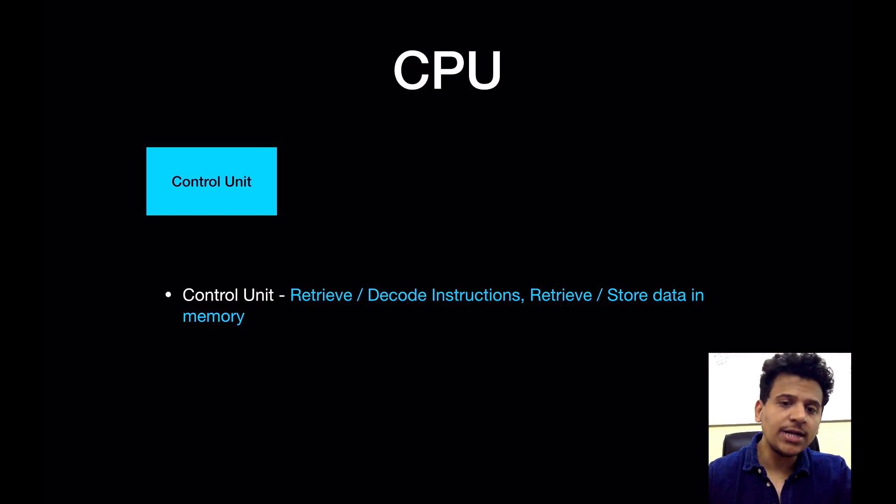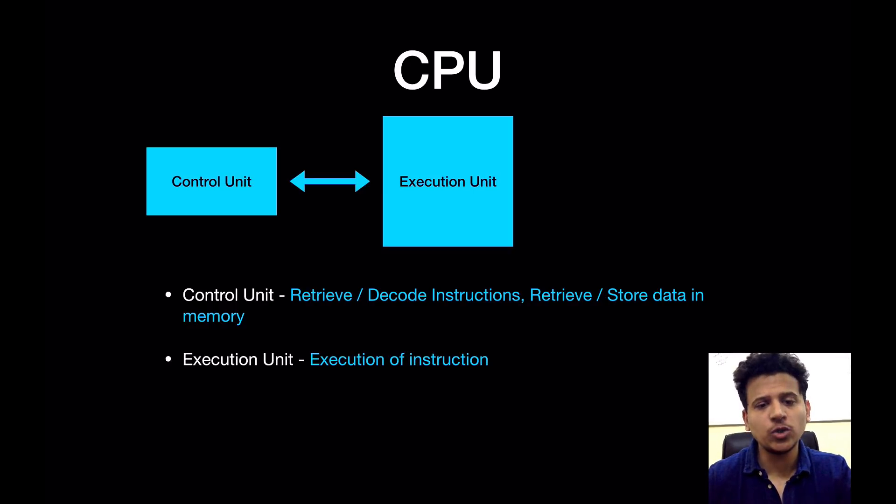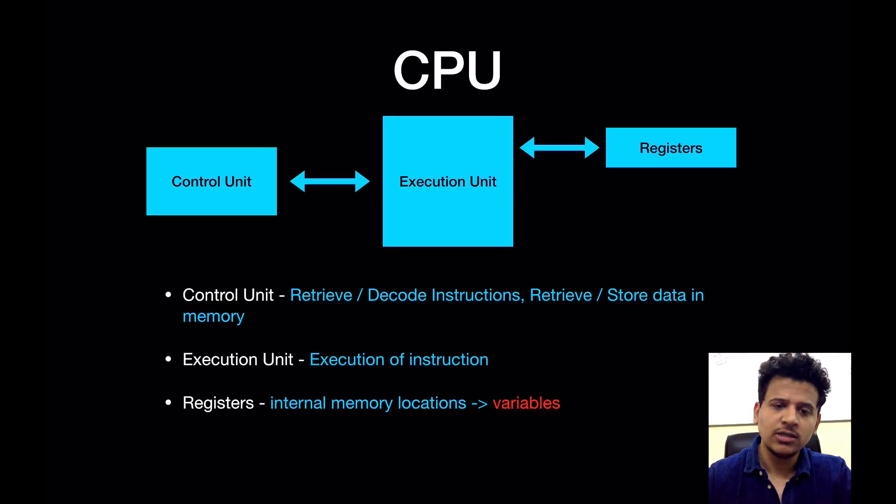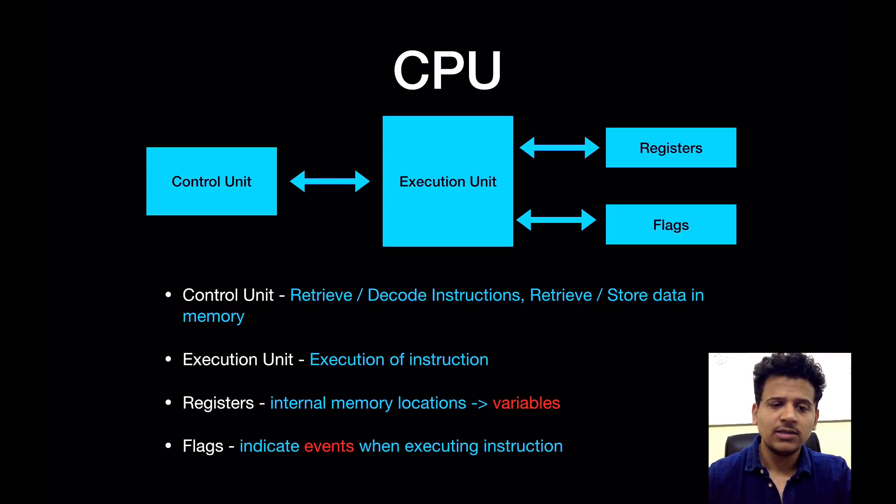Now we'll look at the CPU. The first part of the CPU is known as the control unit. So control unit is responsible for retrieving and decoding instructions as well as retrieving and storing data into the main memory. Next one is known as the execution unit, so it is responsible for execution of an instruction. Next one is known as the registers - so the registers are the internal memory locations. We can use them as variables. And the last one are the flags. So flag indicates different events when executing instructions.